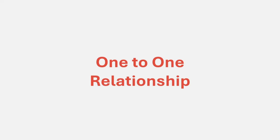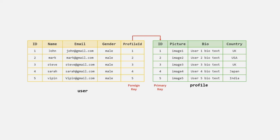To define a one-to-one relation between two tables, in the table from where we want to relate to another table, we should have a column that stores a foreign key. This foreign key is nothing but the primary key of the other table to which we want to relate. So in the user table, we should have a column storing the primary key from the profile table, and that will be called a foreign key because it comes from a foreign table.